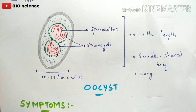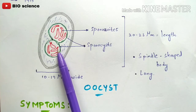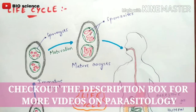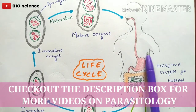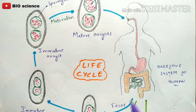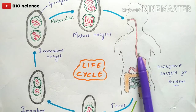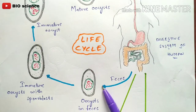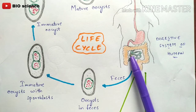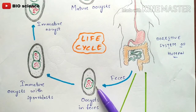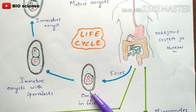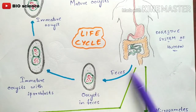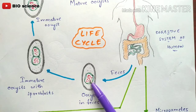Now let us see the life cycle exhibited by Isospora belli to cause isosporiasis. The life cycle starts from a human being infected with isosporiasis. The infected person excretes fecal material, and along with that fecal material, oocysts of Isospora belli are also released. The oocyst released at this stage is immature in form — the sporocysts are not completely developed yet.